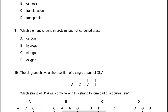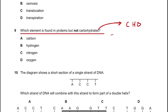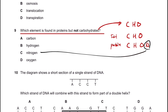Number 9. Which element is found in proteins but not in carbohydrates? Carbohydrates are made of carbon, hydrogen, and oxygen. Fats are also made of carbon, hydrogen, and oxygen. Proteins, however, are made of carbon, hydrogen, oxygen, and nitrogen. Hence the answer is C — nitrogen.